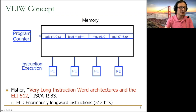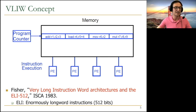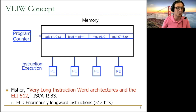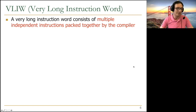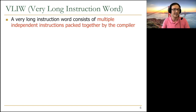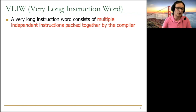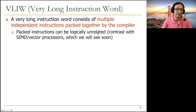Later we see VLIW machines that can fetch, decode, and execute 28 instructions concurrently. Of course, the compiler needs to ensure those 28 instructions can be executed concurrently in a single cycle. A very long instruction word consists of multiple independent instructions packed together by the compiler. The VLIW proponents also say it's very tough to program these machines manually, so you really need automatic compilation.